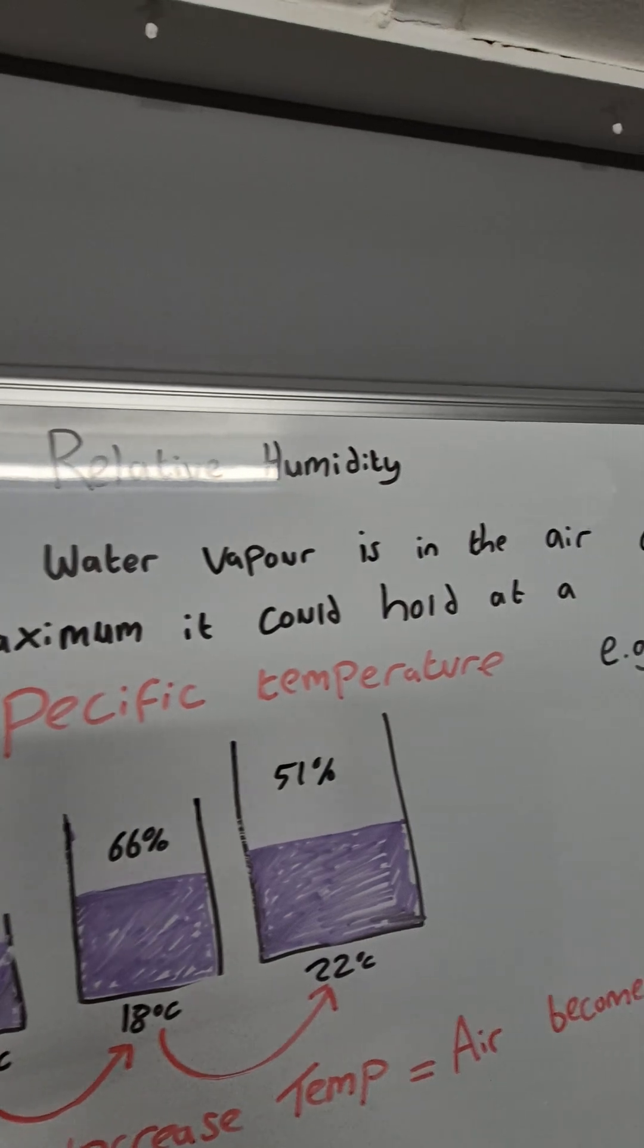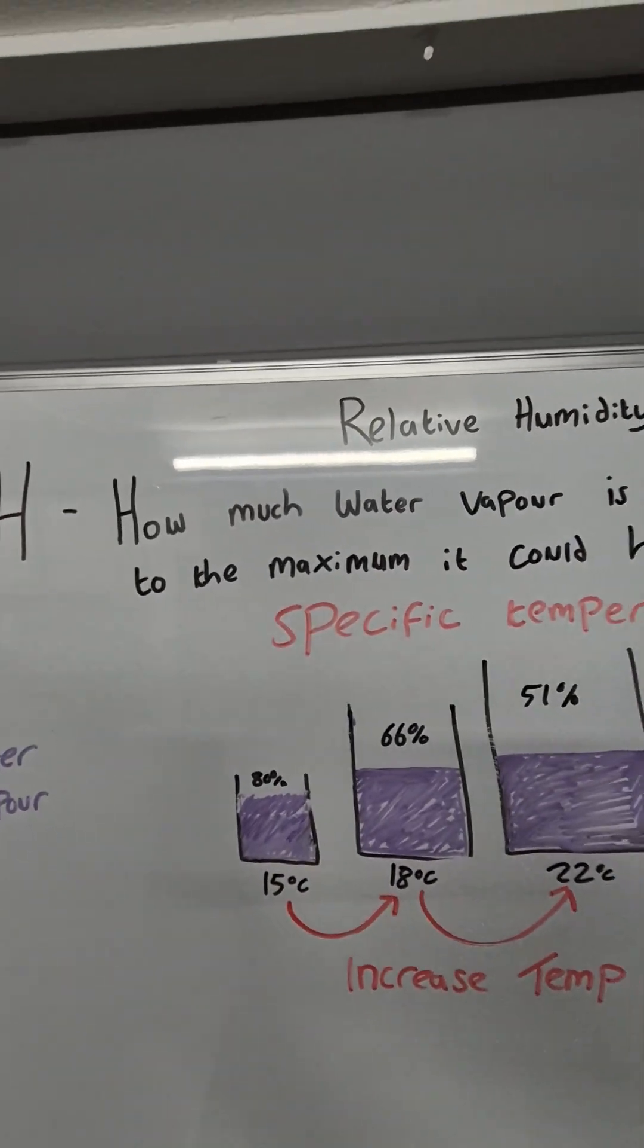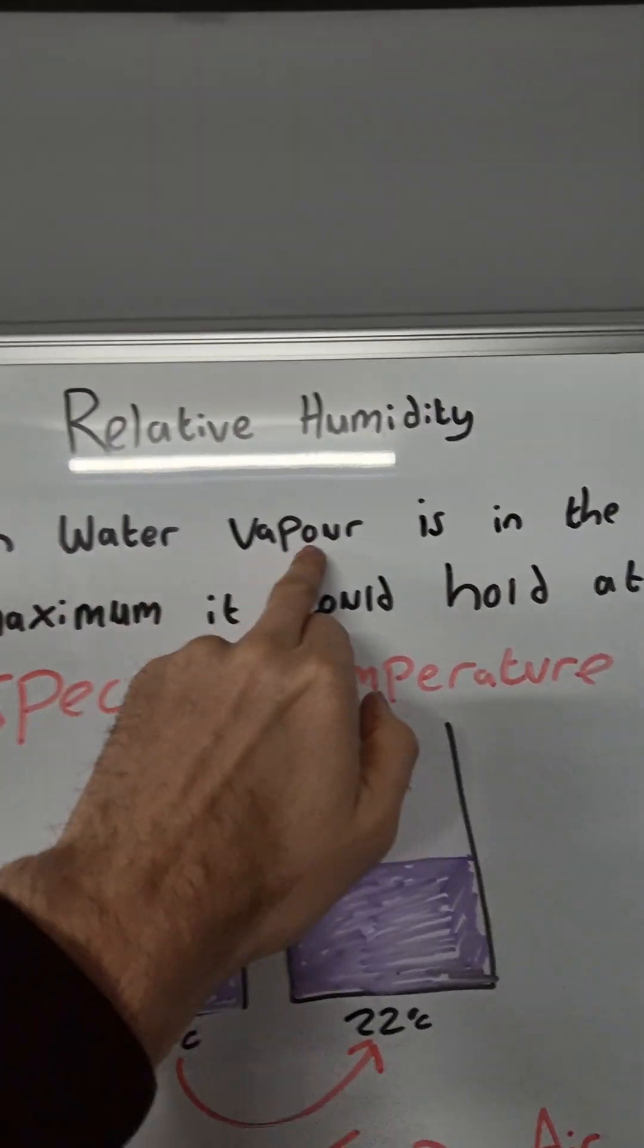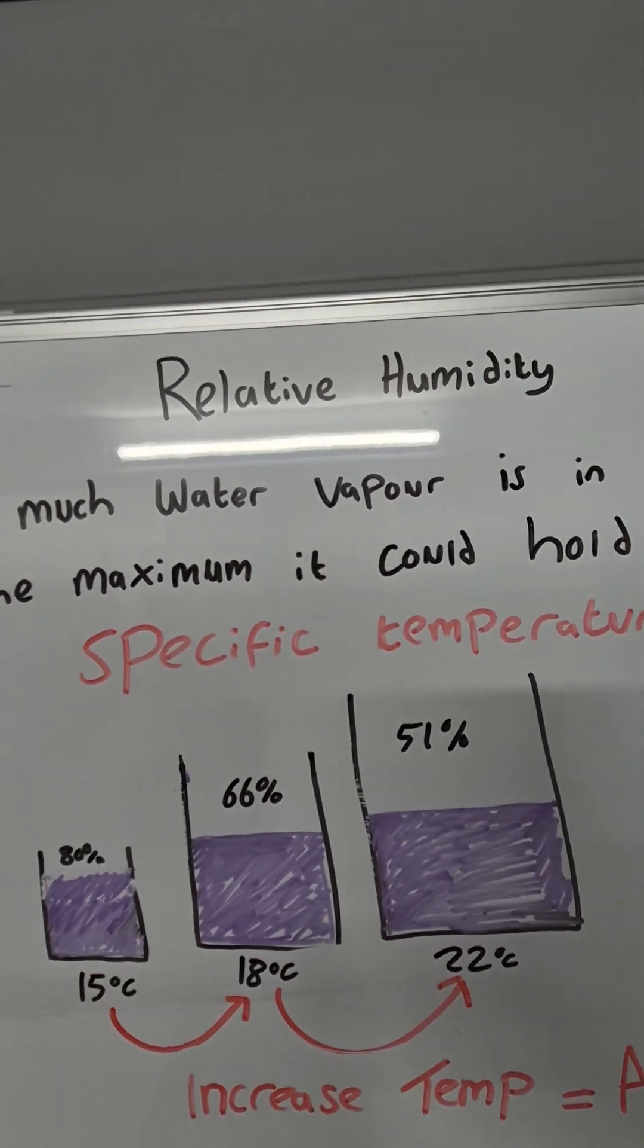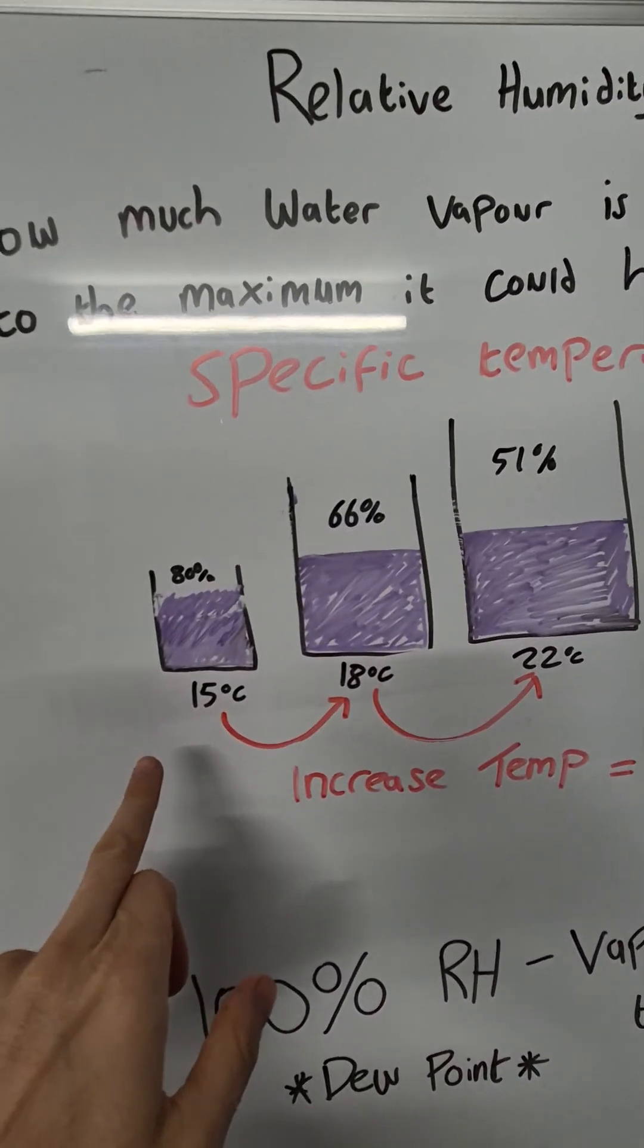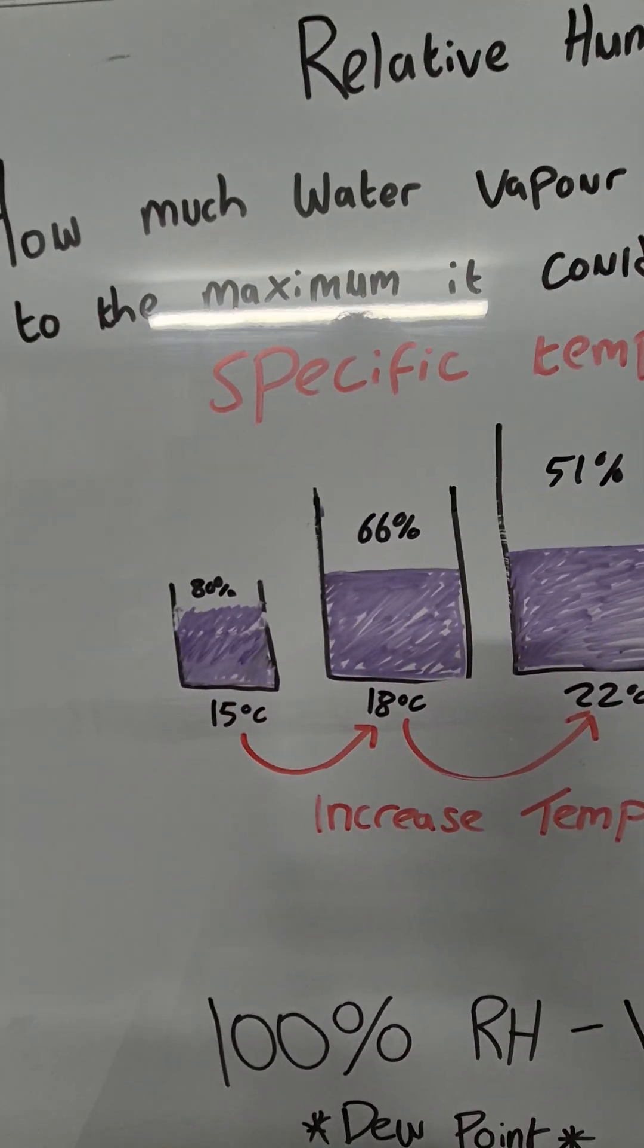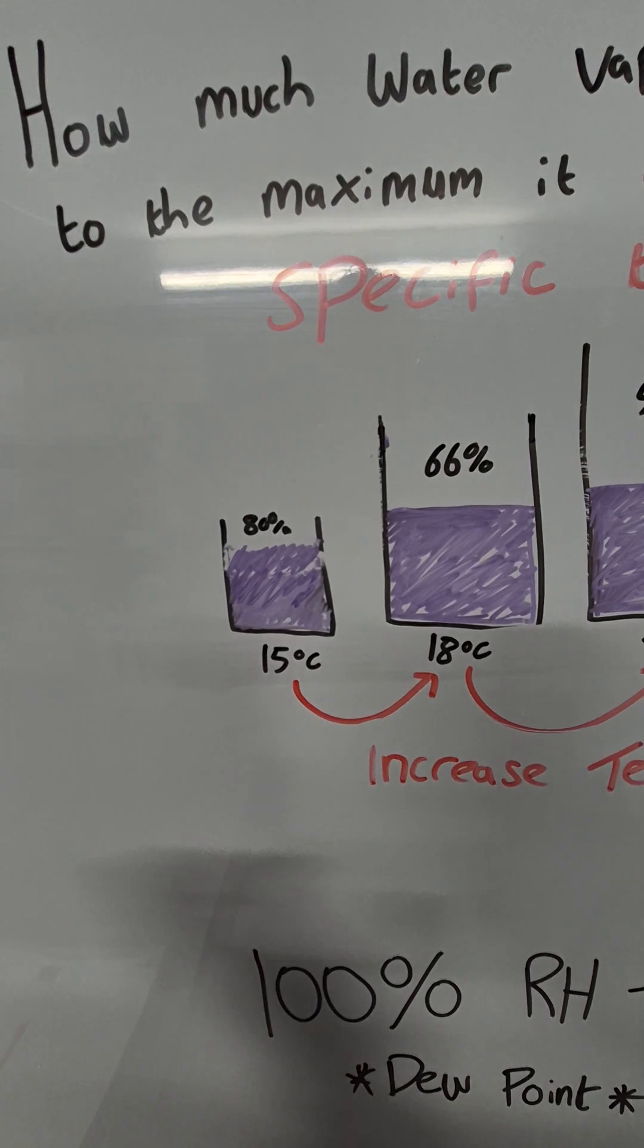Well it's actually how much water vapour is in the air compared to the maximum it could hold at a specific temperature. Now water vapour is the water in its gas form and if we look here, here I have examples of three buckets and these buckets represent the air and its capacity to hold moisture at these different temperatures.